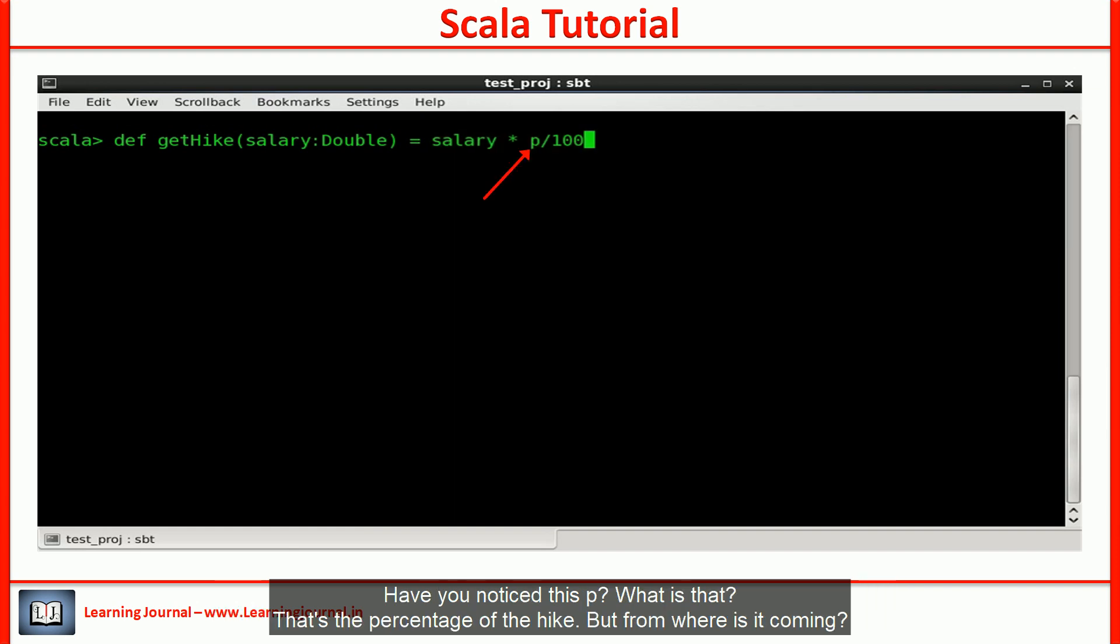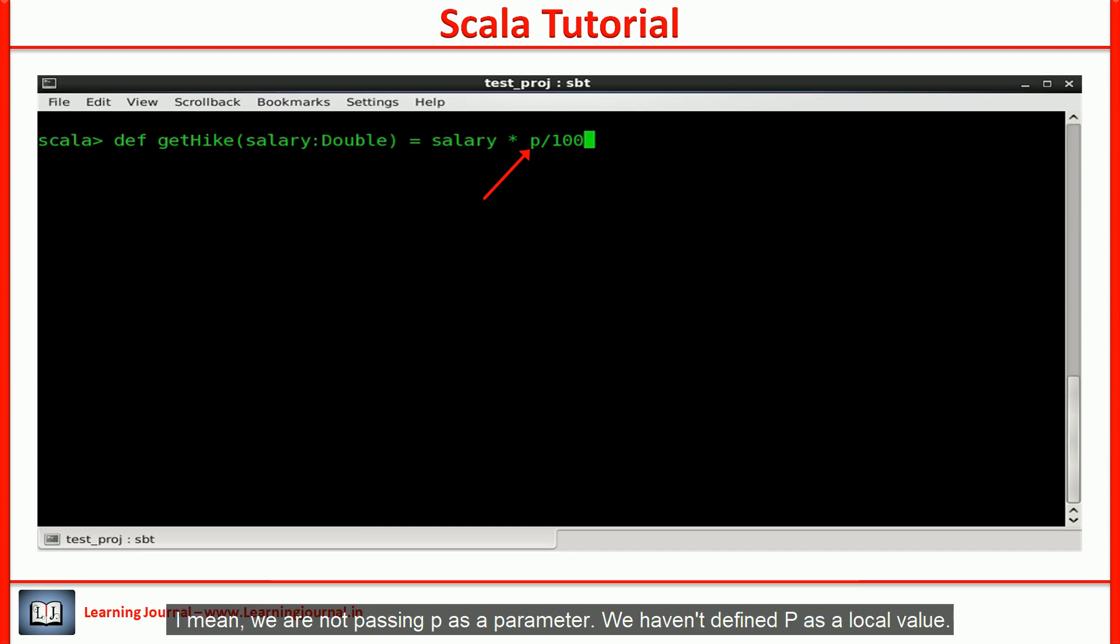Have you noticed this p? What is that? That's the percentage of the hike. But from where is it coming? I mean, we are not passing p as a parameter.